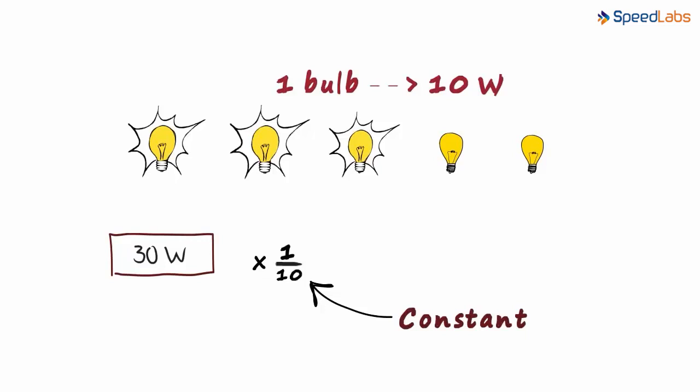So if the total power supplied is 40 watts, then the number of bulbs that will be lit is 40 multiplied by 1 by 10, which is 4. And similarly, if 50 watts is supplied, then 5 bulbs will be lit.